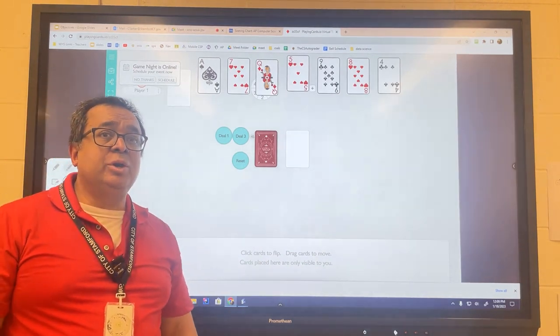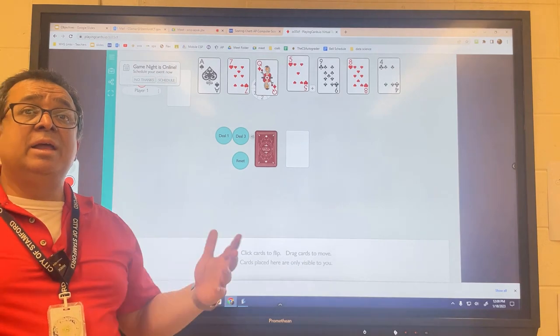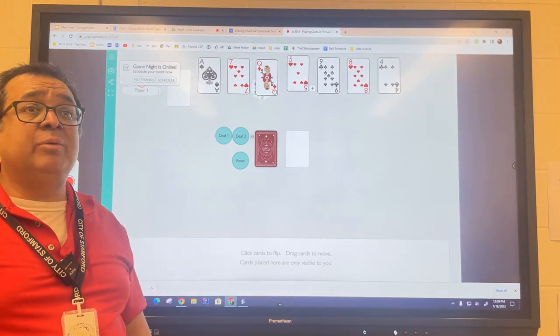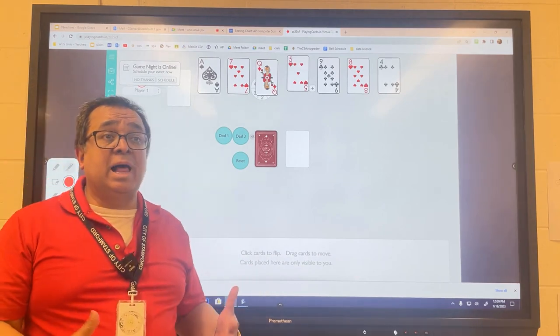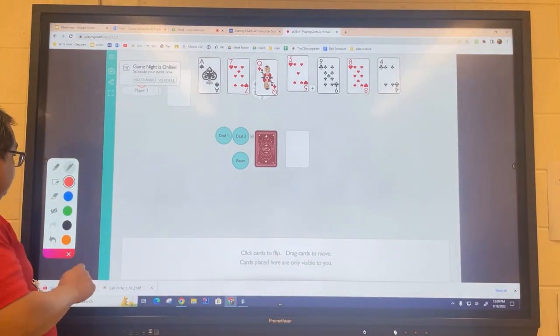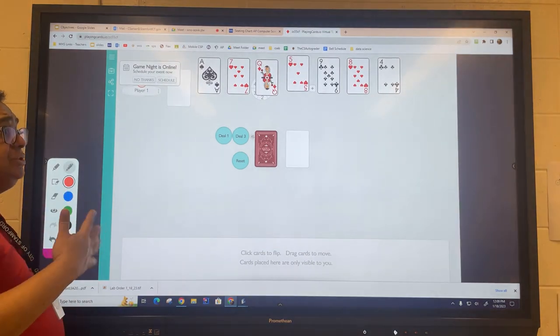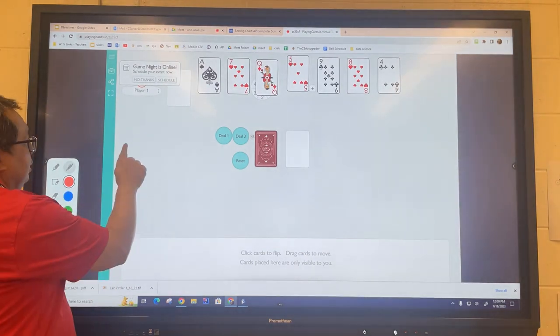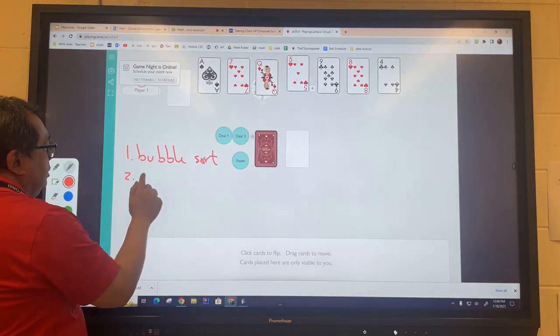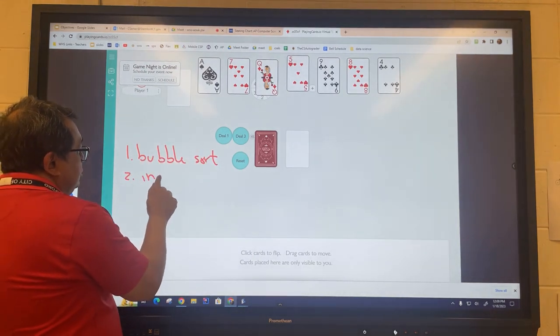Later on I'll show you how to use the array library to sort an array, but we're going to look at that differently today. We're going to look at more of a manual algorithm for sorting. In your AP CSA, you need to learn three sorting techniques: you need to learn bubble sort, you need to learn insertion sort, and you need to learn selection sort.